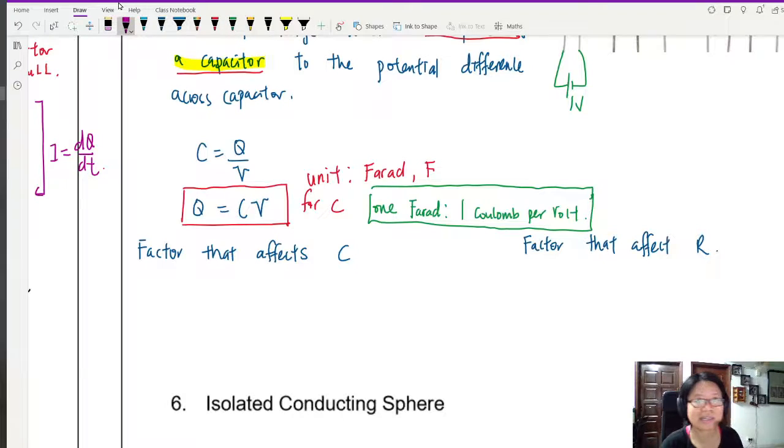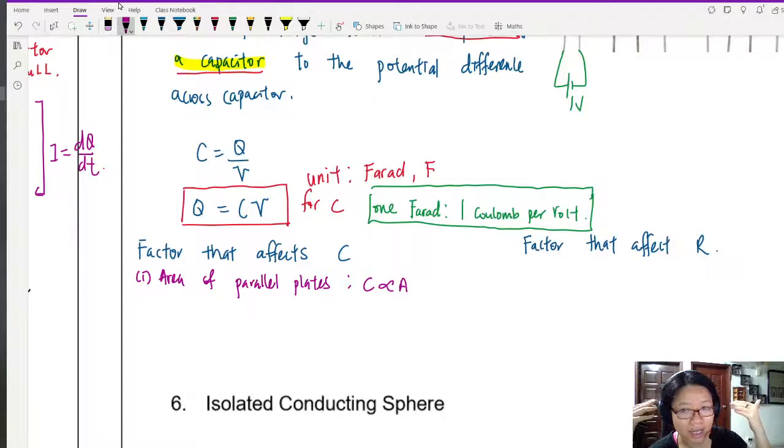So here, one of the factors that affects the capacitance, let's think about this. I want it to be easier to store charge. So the first factor is actually the area of the parallel plates. A larger area will make it easier to store charge. So C is actually proportional to A. Sorry, not store charge, easier to separate the charges. So a larger area, greater capacitance.